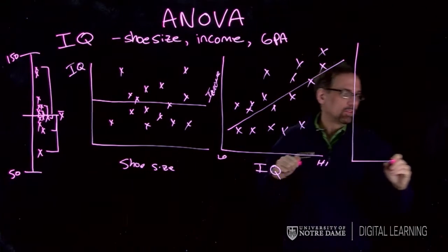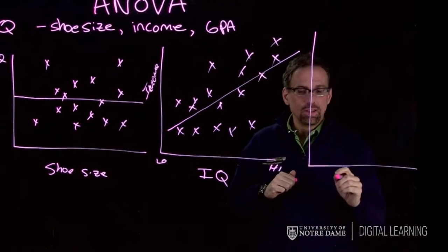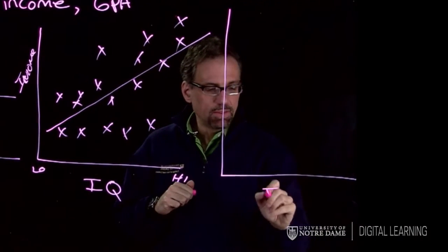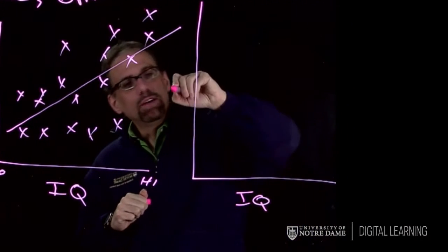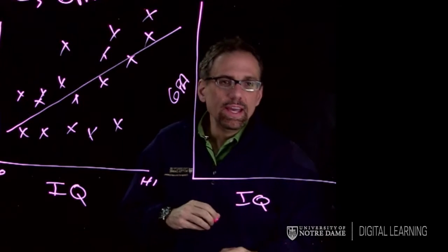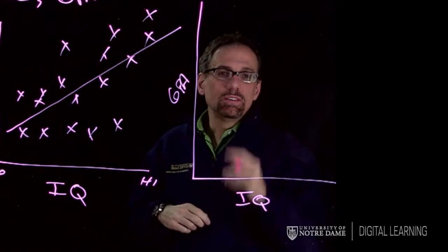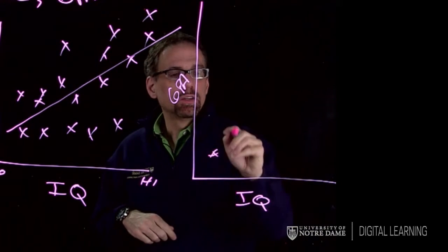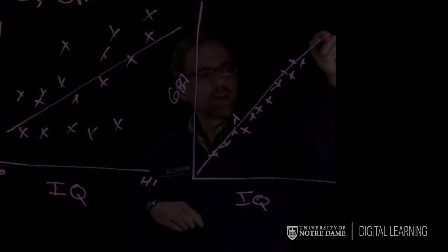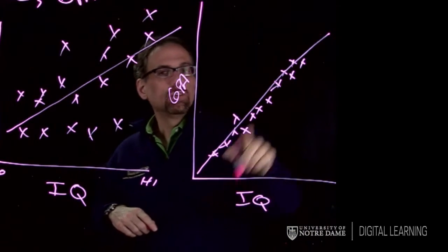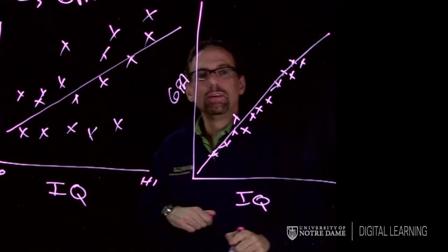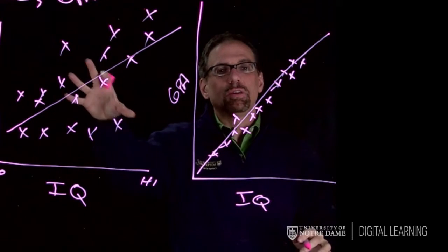So let's just draw the same thing here, except this time we have IQ down here and we have GPA up here. And this time, since they're very closely related, the data is going to look more like this. So as IQ goes up, GPA goes up. So the same kind of relationship we had here, but this time, IQ accounts for a lot more of the variability.